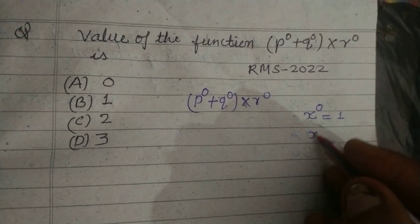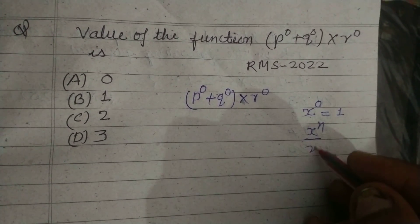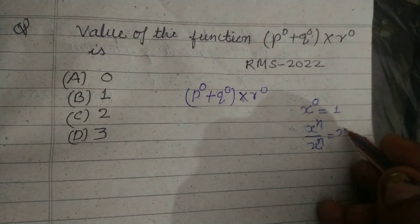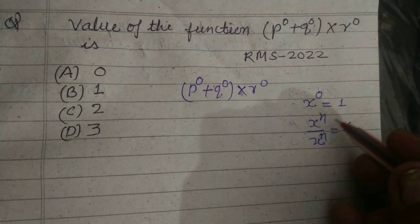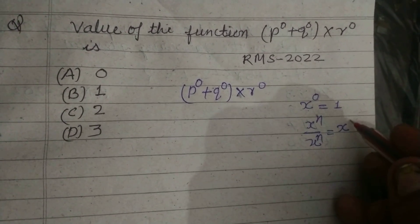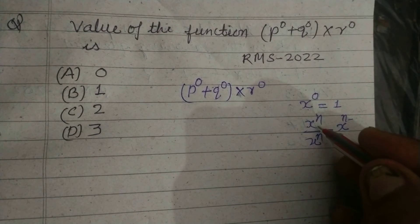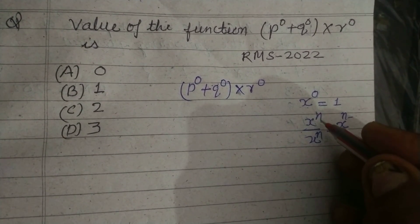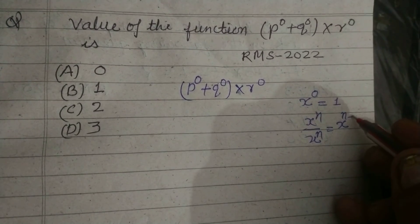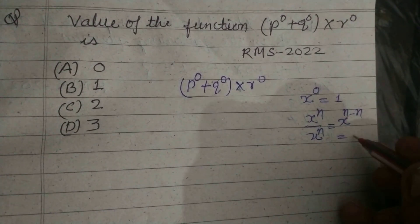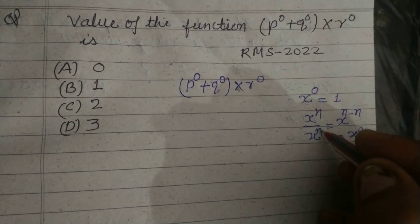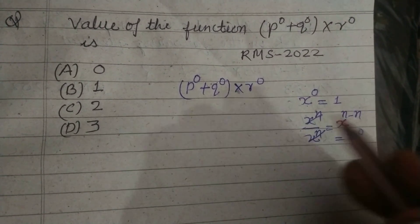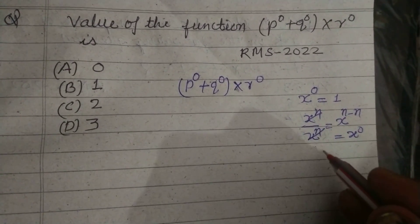How is this possible? When x^n divided by x^n, on division powers are subtracted. So when we divide x^n over x^n, this is x to the power n minus n, which is x to the power 0, or we can divide a number by itself to get 1.